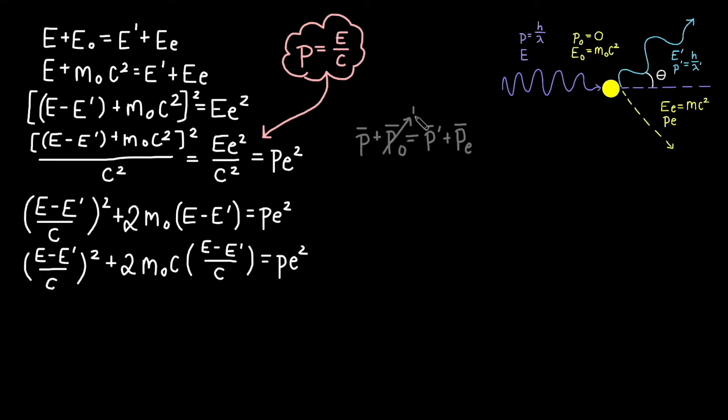First off, we can eliminate the initial momentum of the electron because in our scenario, we assume the electron starts at rest and its momentum is zero. We are left with the remaining three momentum vectors. If we square both sides, we can rewrite our vectors as scalar quantities. This is essentially the law of cosines.